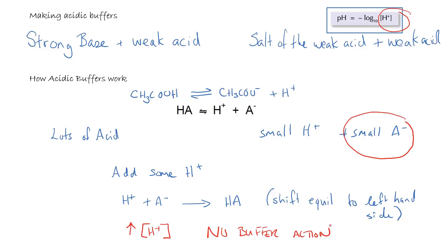Therefore, in order to make a buffer, what we have to do is increase the concentration or the moles of the A⁻. The two ways of doing that are: we can add a strong base to the weak acid, or we can simply add the salt of the weak acid to the weak acid, in order to increase this value.